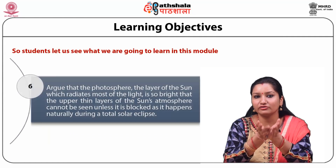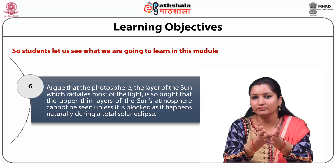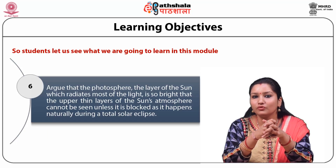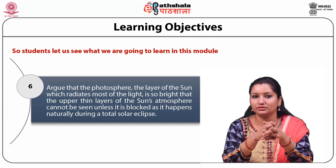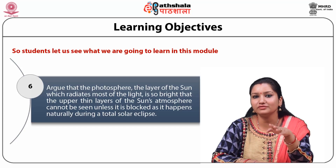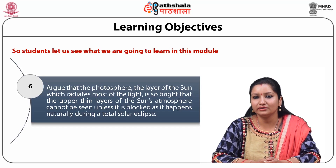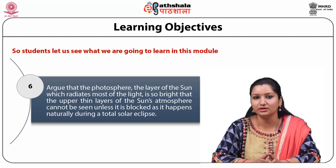We will argue that the photosphere — the layer of the Sun which radiates most of the light — is so bright that the upper thin layers of the Sun's atmosphere cannot be seen unless it is blocked, as happens naturally during a total solar eclipse. Before we get into details, let's have a brief introduction.